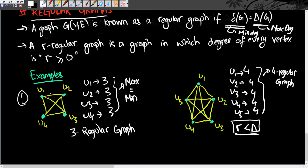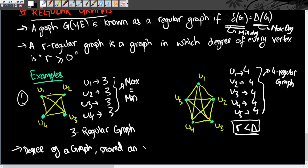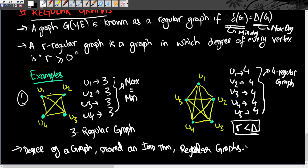To summarize this lecture: we first learned about the degree of a graph, then proved the fundamental handshaking theorem, and finally looked at regular graphs. In the next video we'll go deeper into the subject. Please like, share, and subscribe if you found it helpful — it might help your friends in college too. Bye!